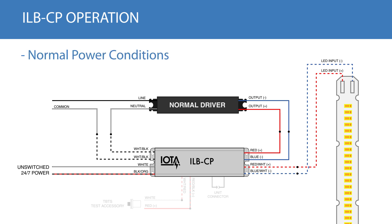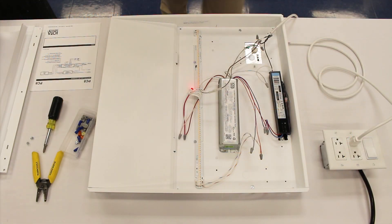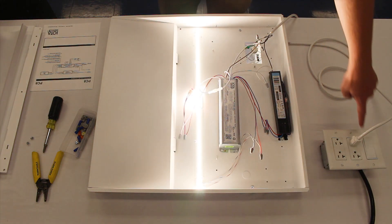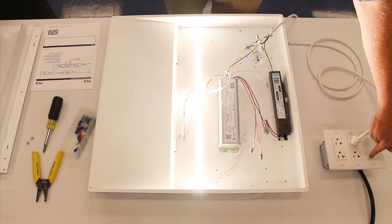During normal power conditions, the ILB-CP will simply pass through power to the LED module. This allows your ILB-CP powered emergency fixtures to be used as normal during normal conditions, and be switched, dimmed, or otherwise controlled.